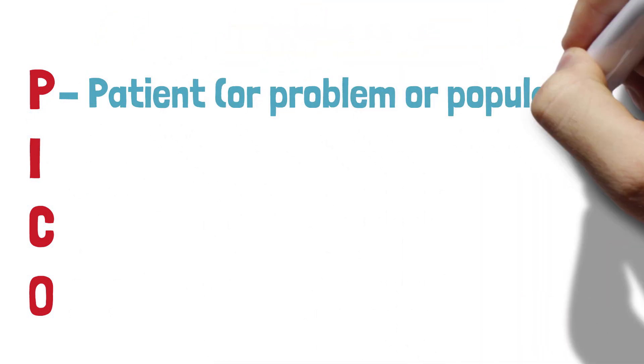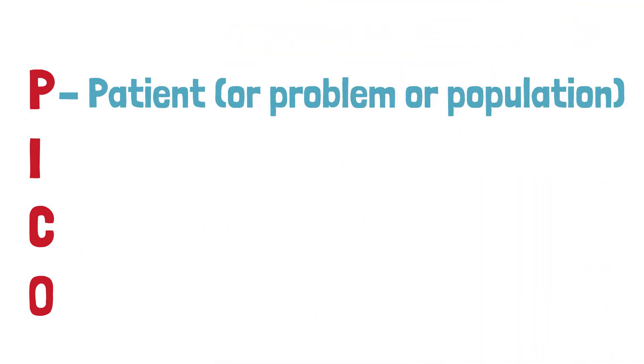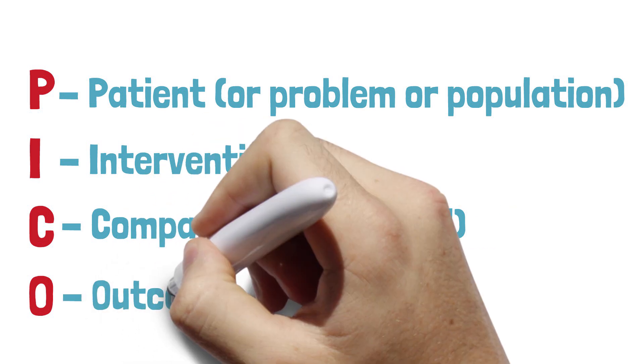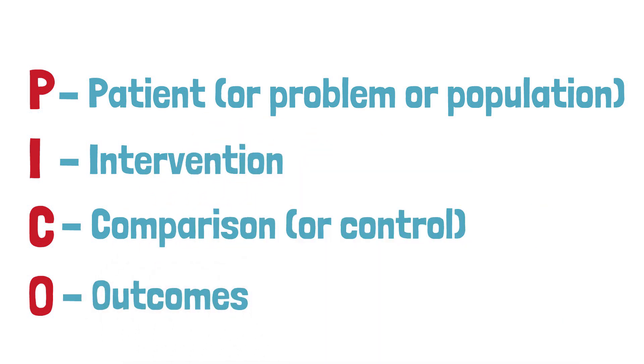You have to start by clearly defining the question you're trying to answer, and it's quite common to use the mnemonic PICO as a framework. PICO stands for P — patient, problem, or population; I — intervention; C — comparison or control; and O — outcomes. By defining these aspects of your research question very clearly, it becomes possible to get going on your literature search strategy.